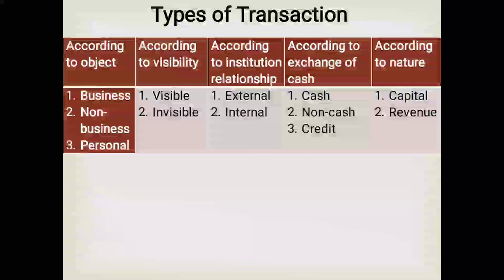Examples of each type: a business transaction is goods purchased on credit for the business. A non-business transaction is a donation paid to a relief fund. A personal transaction is money drawn from the business by the owner. For visibility: goods sold on credit is a visible transaction, while depreciation on furniture is an invisible transaction.